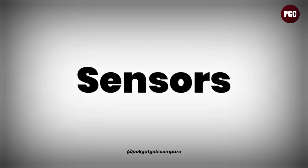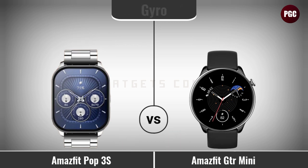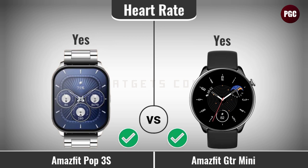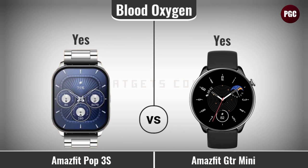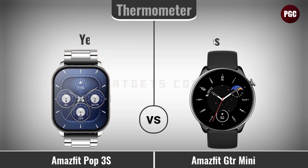Now for sensor comparison: accelerometer, gyro, heart rate, barometer, blood oxygen, light sensor, and thermometer.